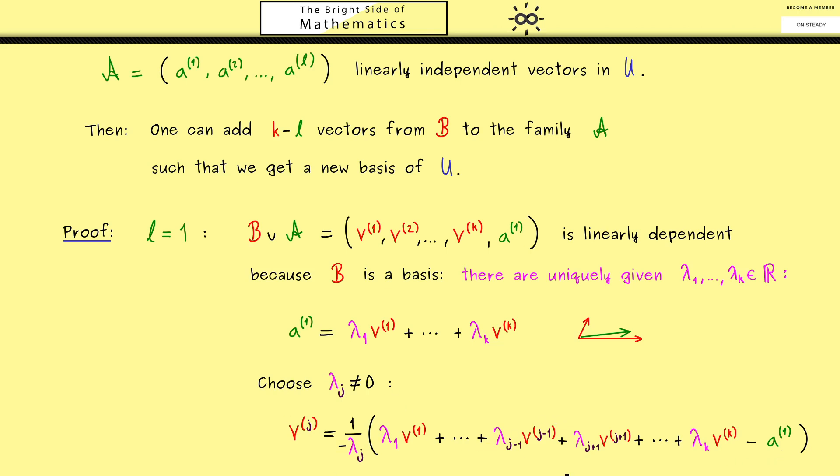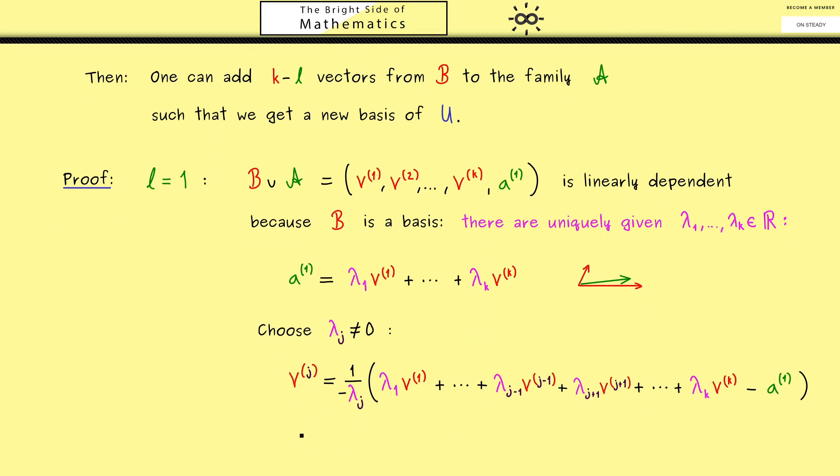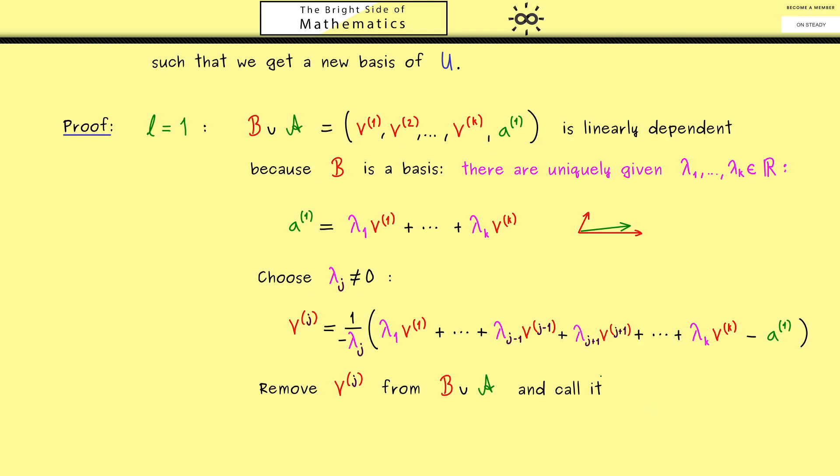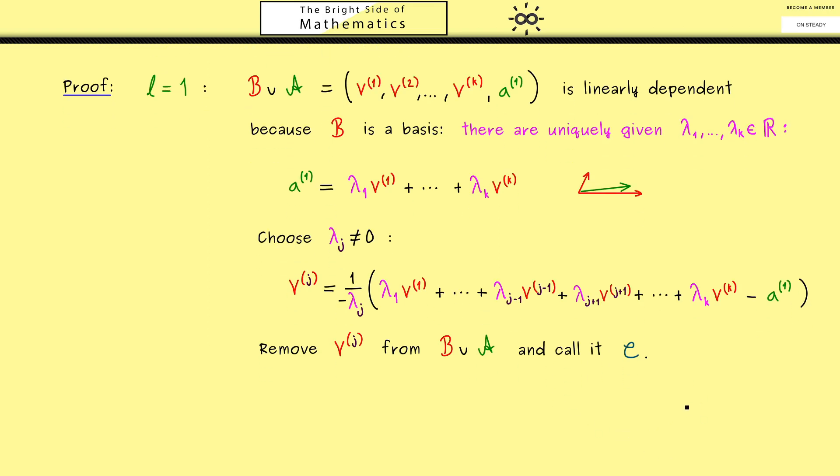Okay, now having this linear combination, we know we can drop v^(j) from the family here without losing any information. Or more precisely, what we want to get is the linear independence now. And for this, let's call the new family we get here C. In fact, what we now can show is that this new family C is a basis for our subspace U as well. Therefore, let's first show that we have the linear independence.